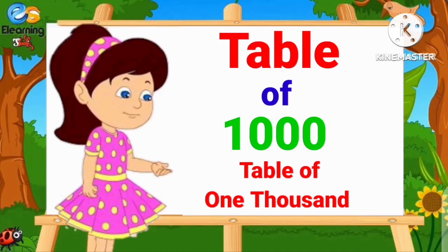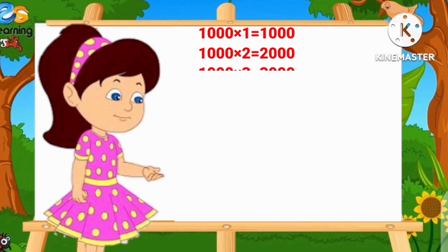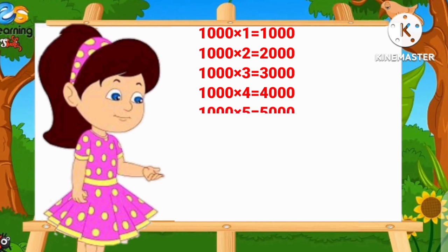Table of 1,000. 1,000×1=1,000. 1,000×2=2,000. 1,000×3=3,000. 1,000×4=4,000. 1,000×5=5,000.